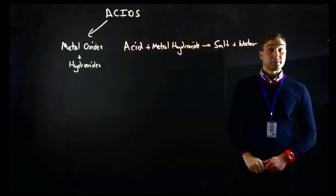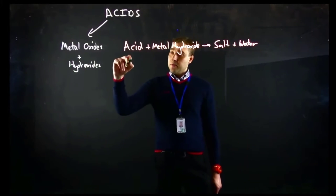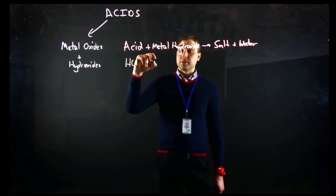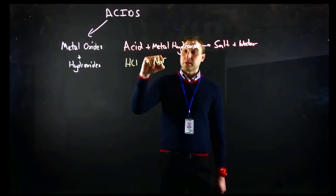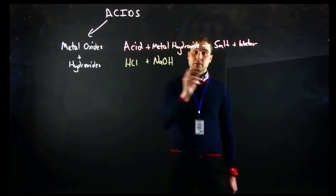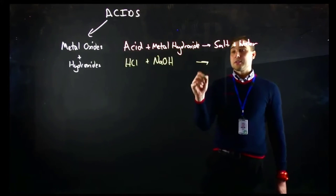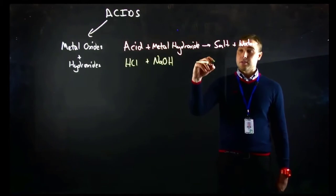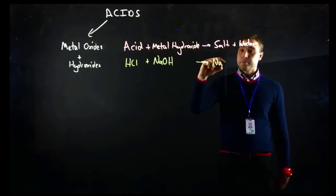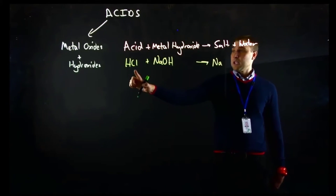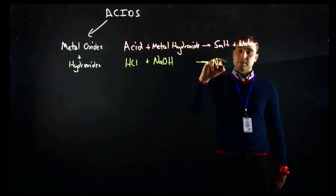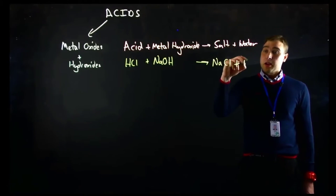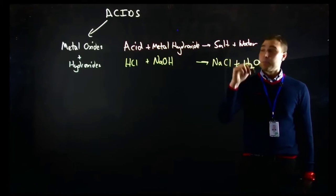Let's have hydrochloric acid reacting with sodium hydroxide. Our salt is made of the positive part of the base — in this case it's the sodium ion — and the negative part of the acid, in this case the chloride ion. So we get sodium chloride again, and we get water.